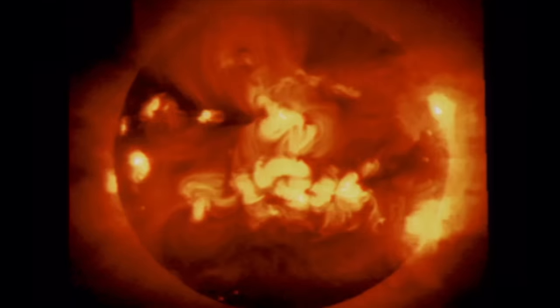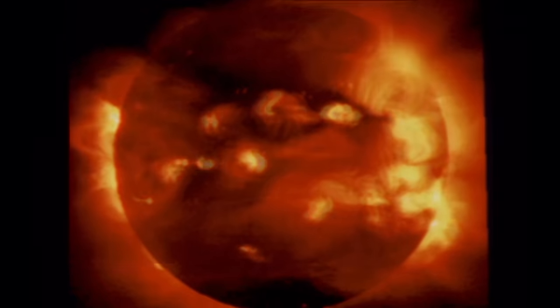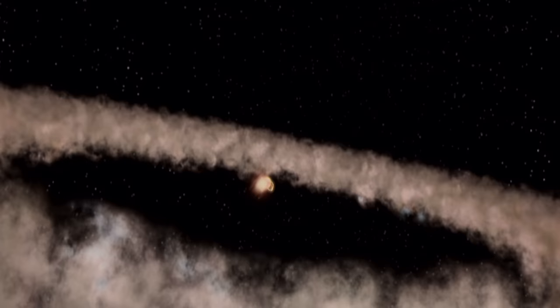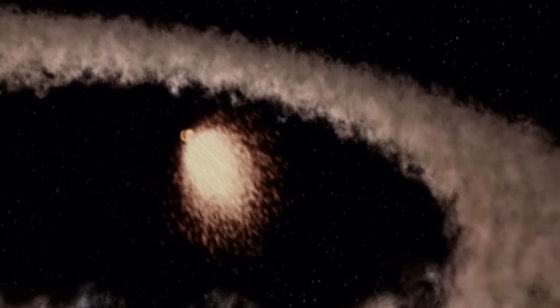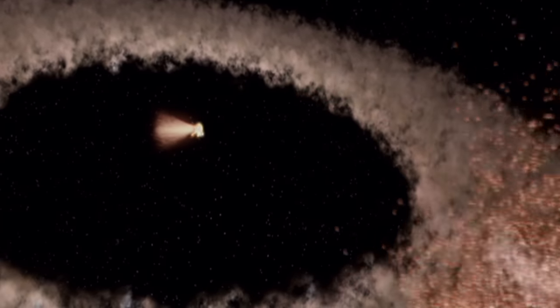Some scientists think if it wasn't for the violent early sun, the Earth and all the planets in the solar system might not be here. 4.6 billion years ago, the solar system is just a cloud of gas and dust racing around the young sun. How it transforms into the solar system we see today is still a mystery.